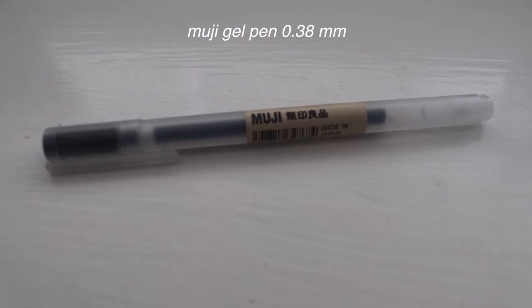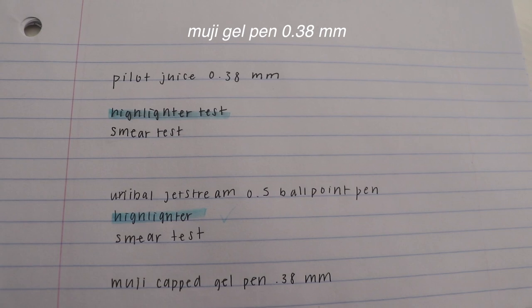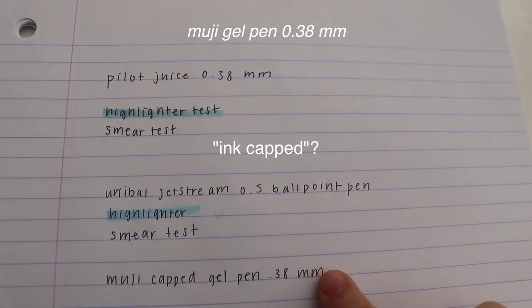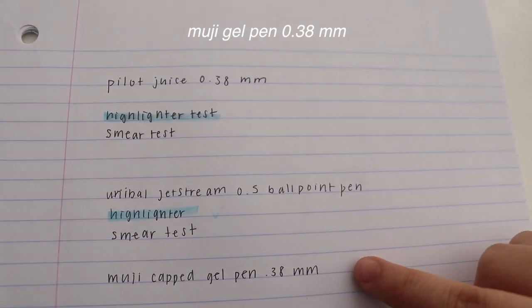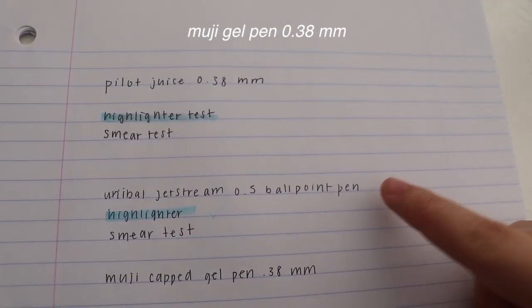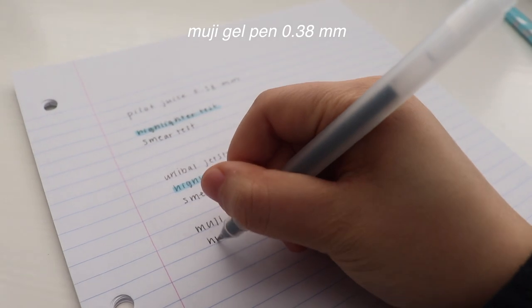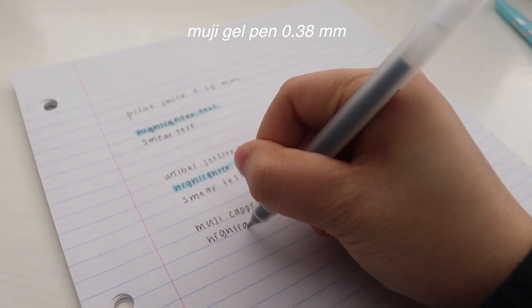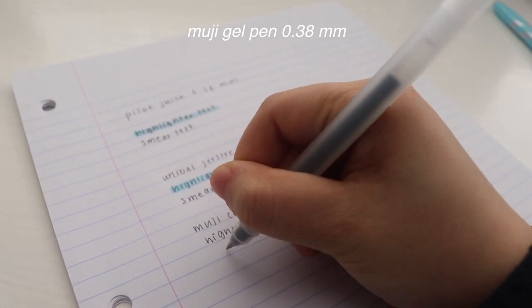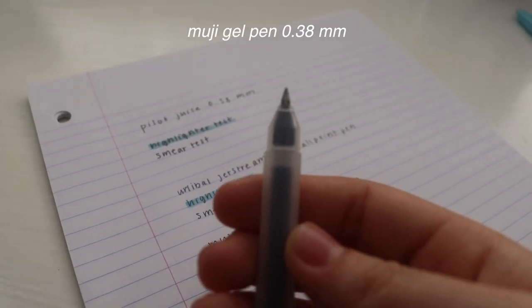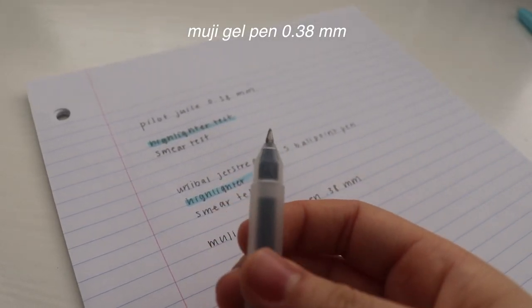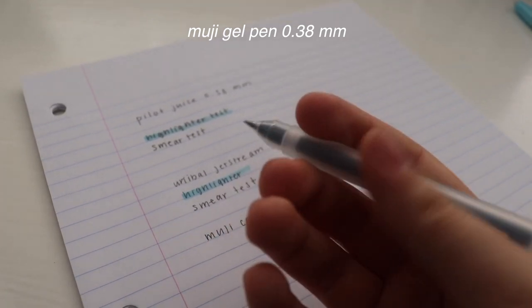The last pen we'll be comparing is the Muji Gel Ink Capped 0.38 pen. The Muji pen is obviously the most visually aesthetic pen, but in terms of writing, I would say it's like an average gel pen. It is a bit scratchy to write with at first, but once you get used to it, it's a little bit better.